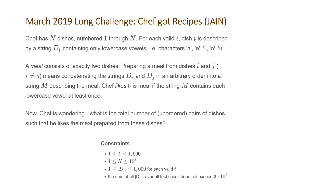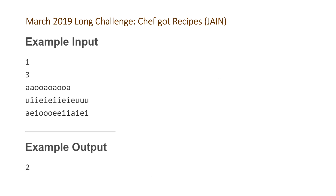Let's take a look at the examples that CodeChef provided. There's only one test case, and we're given three dishes. The first consists of the vowels A and O. The second consists of the vowels U, I, and E. The third consists of the vowels A, E, I, and O — so the only one missing is U. The answer for this is 2.